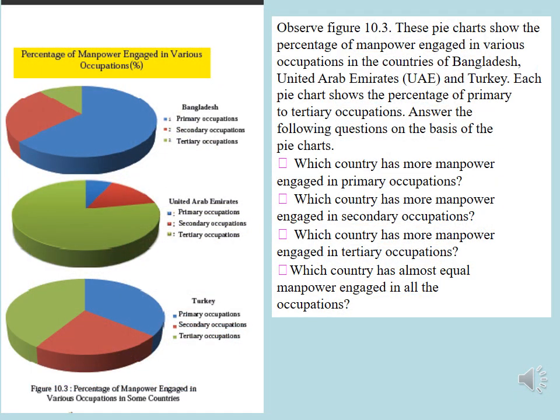This is how we classify human occupations. Different occupations are practised in different countries of the world. Through these occupations, economic transactions occur within a country and between various countries. These transactions decide the country's production of various goods and their annual income, which in turn is used to decide the extent of the country's development.